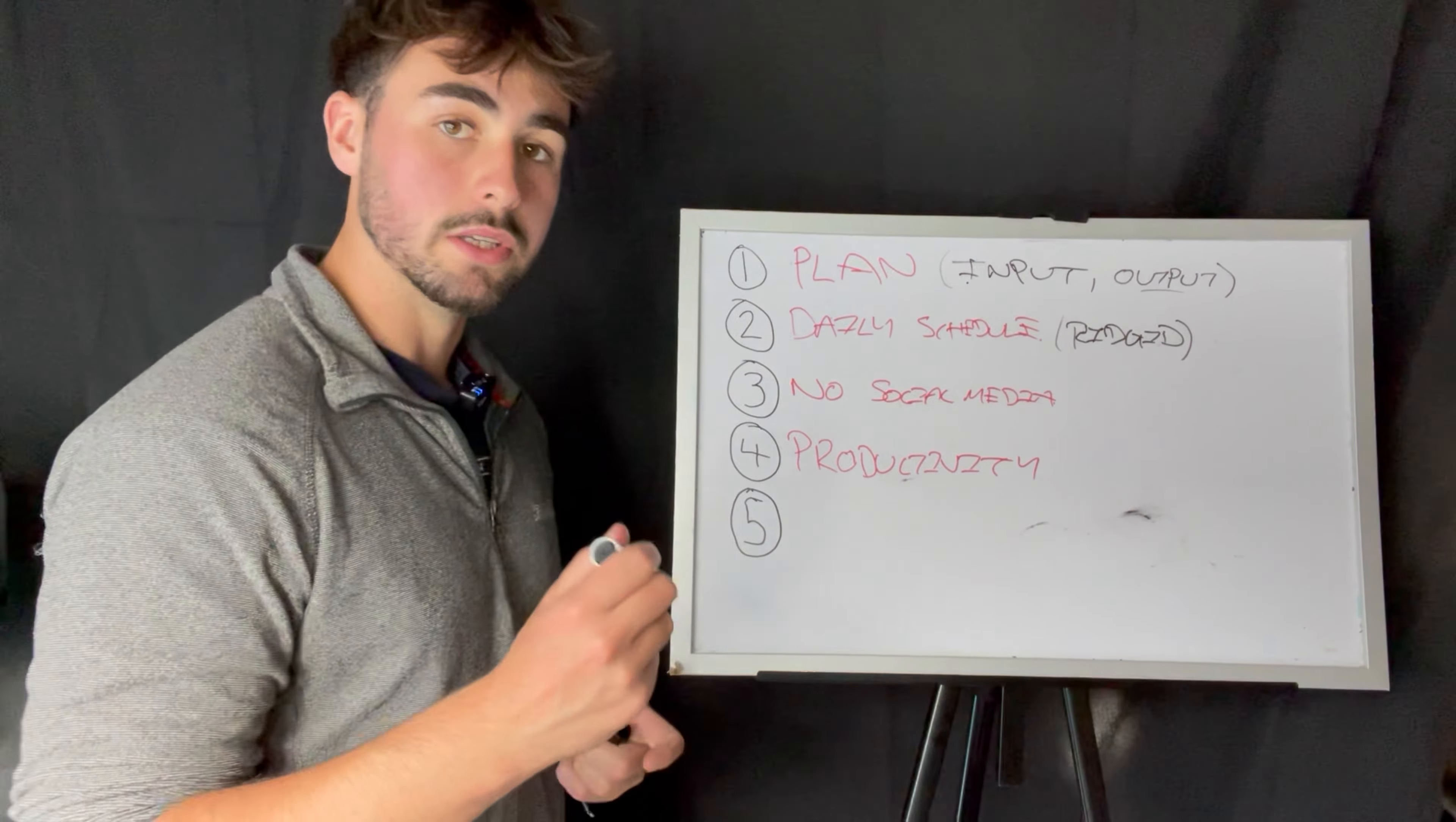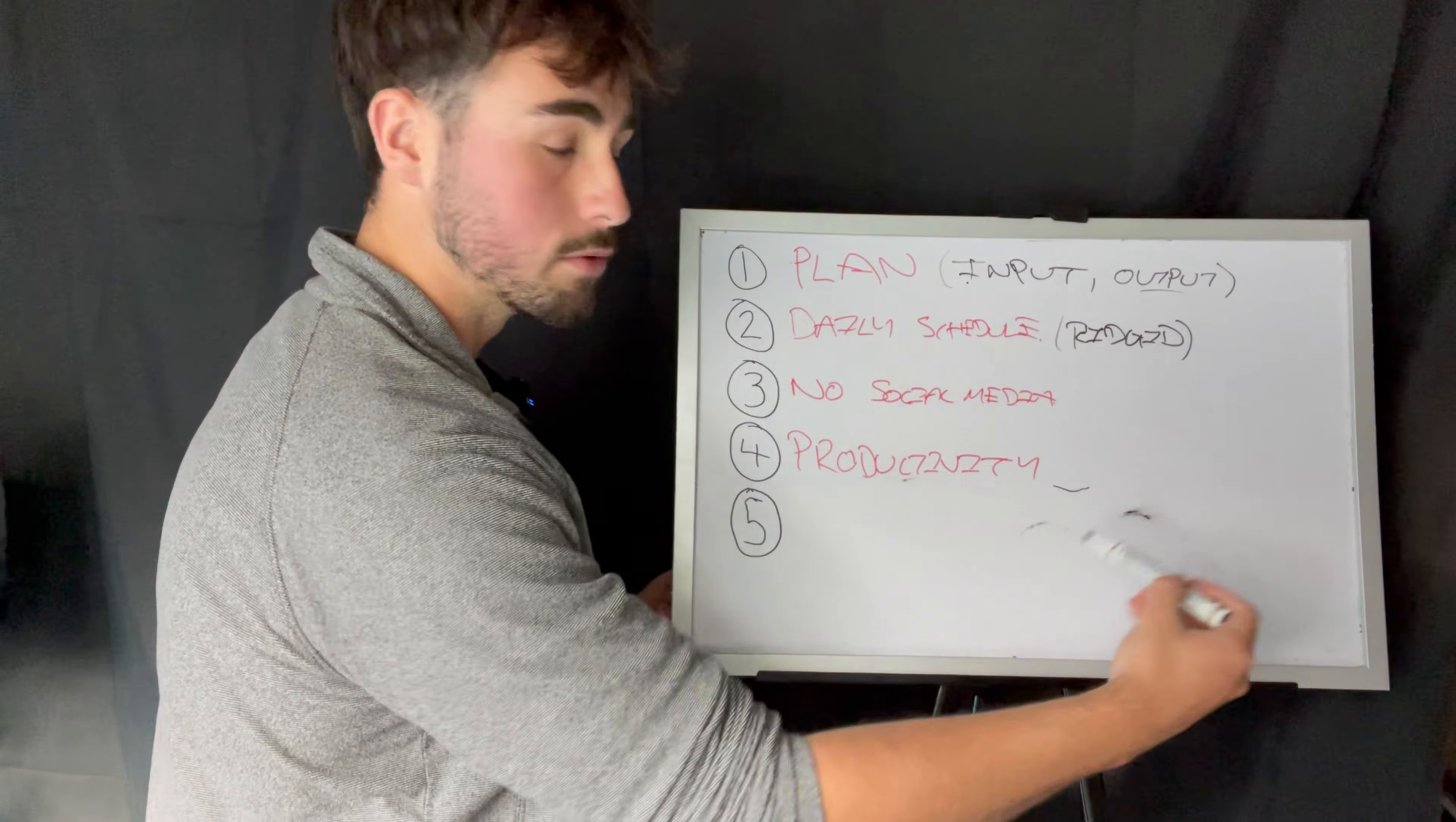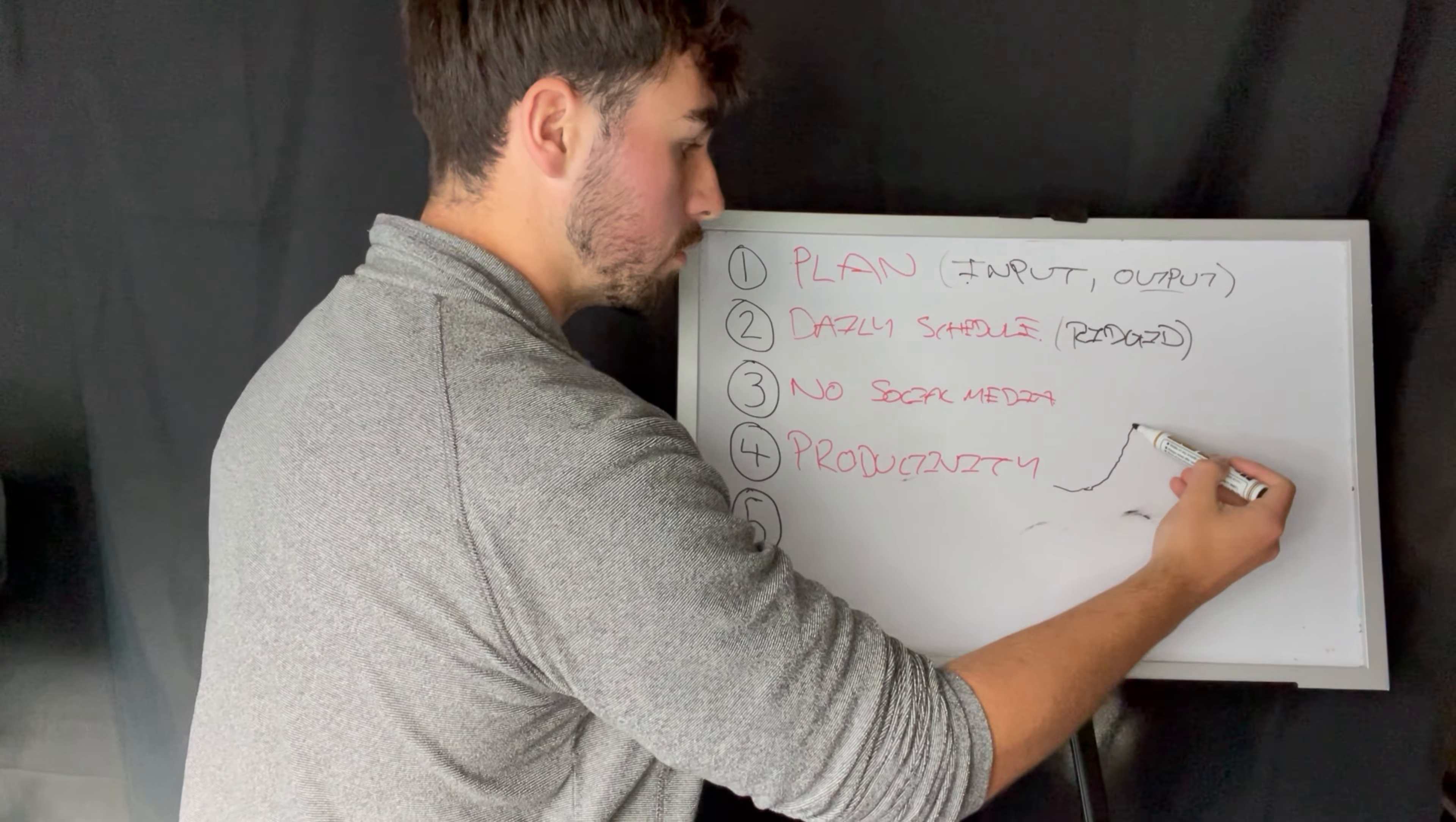Number four is to research into productivity. You'll soon find that your winter arc will have a compound exponential growth. This will be you on your first couple days on the winter arc: slow progress, slow progress, slow progress.